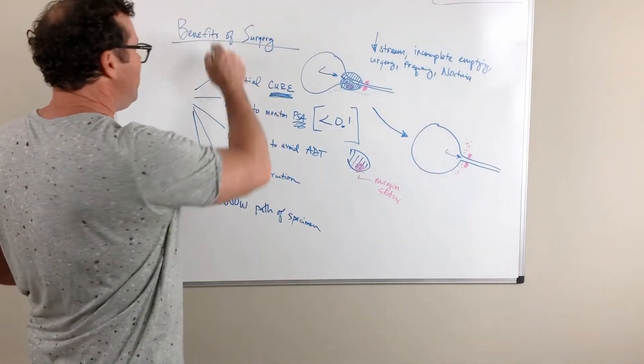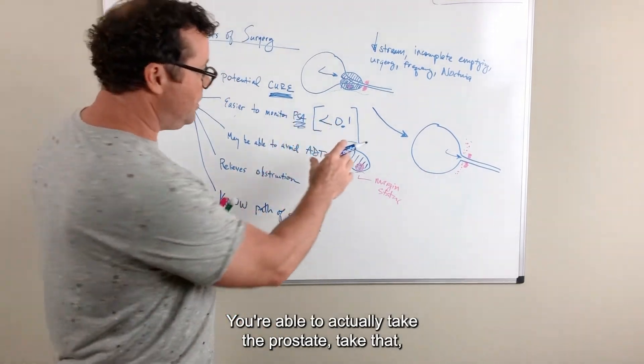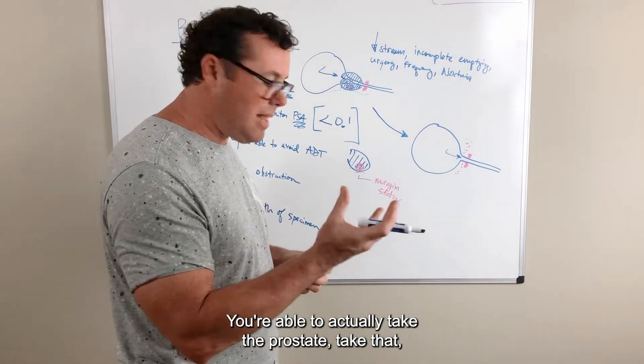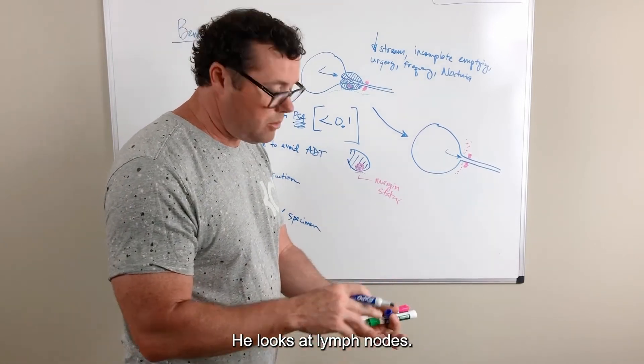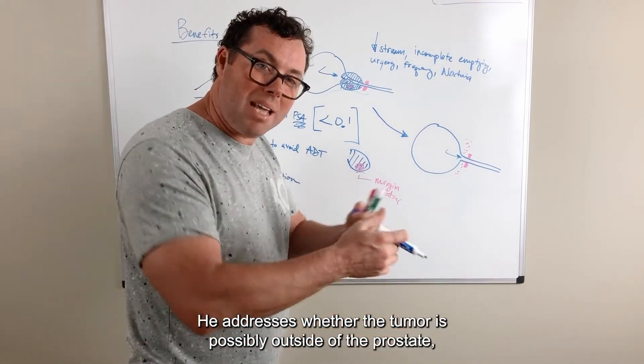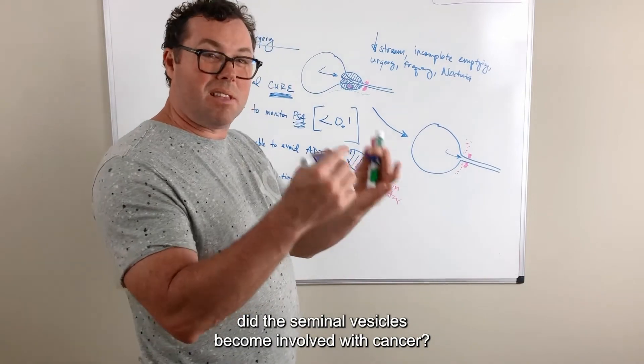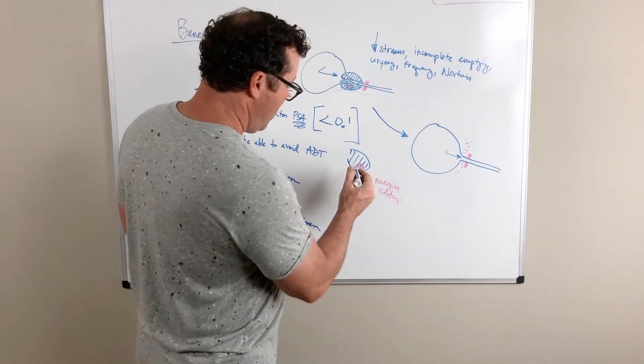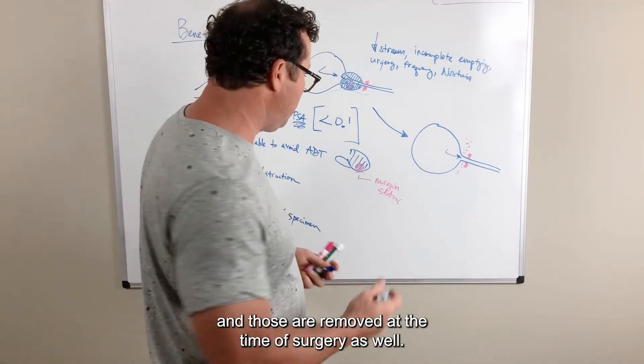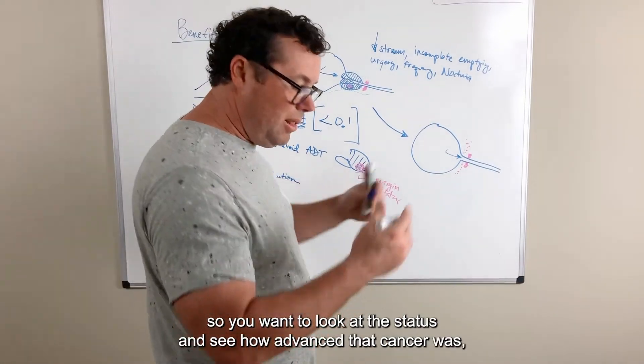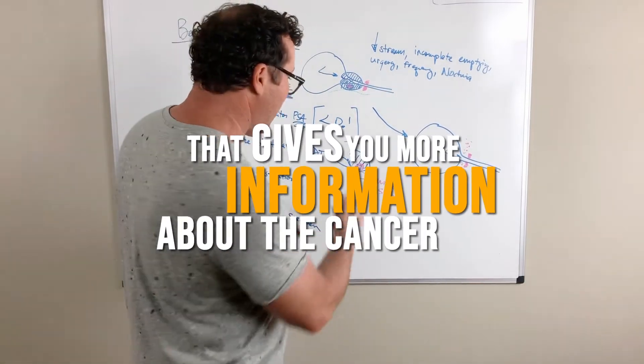and then the fifth thing, reason guys may choose surgery is they know their pathology specimen. You're able to actually take the prostate, and the pathologist looks at it. He looks at the specimen, he looks at lymph nodes. He addresses whether the tumor is possibly outside of the prostate, or is it all contained within the prostate. He will look and see, did the seminal vesicles become involved with cancer? The seminal vesicles are these tubes that sit on the back side of the prostate, and those are removed at the time of surgery as well. So you want to look at the status and see how advanced that cancer was, because that gives you more information about the cancer.